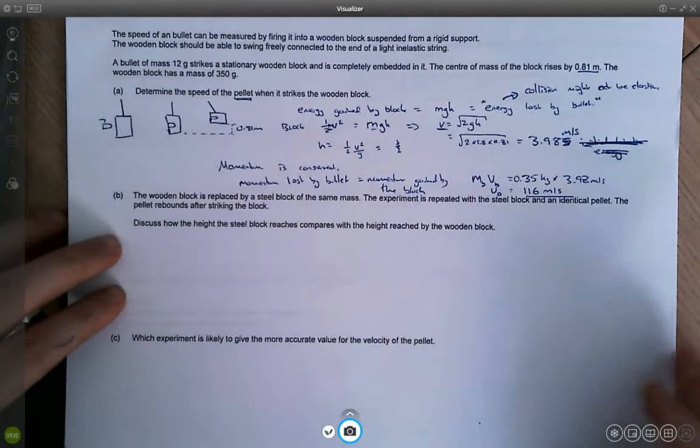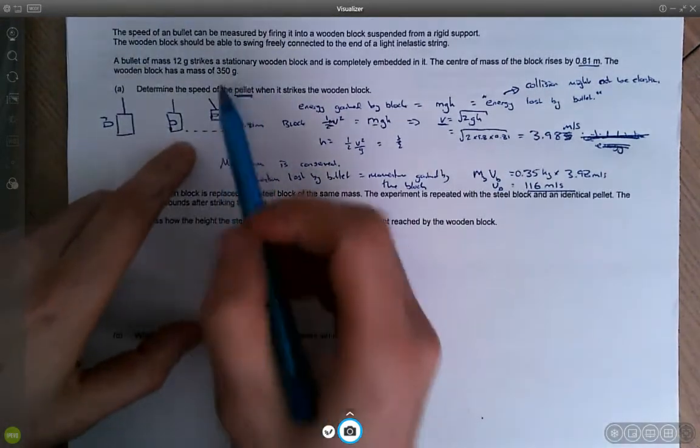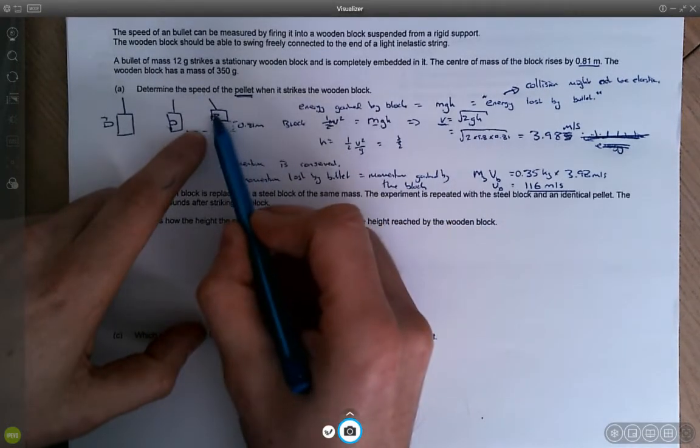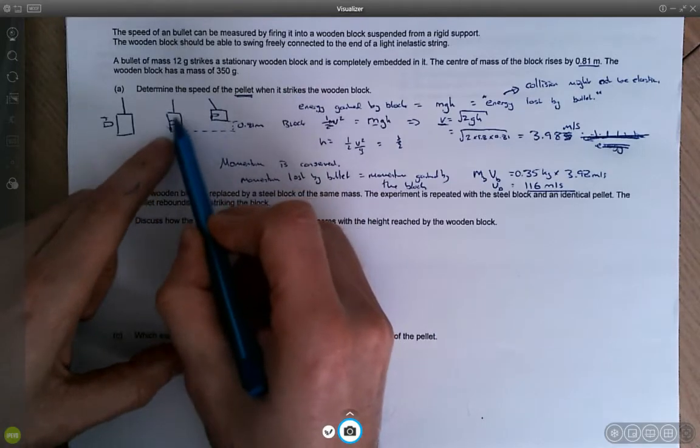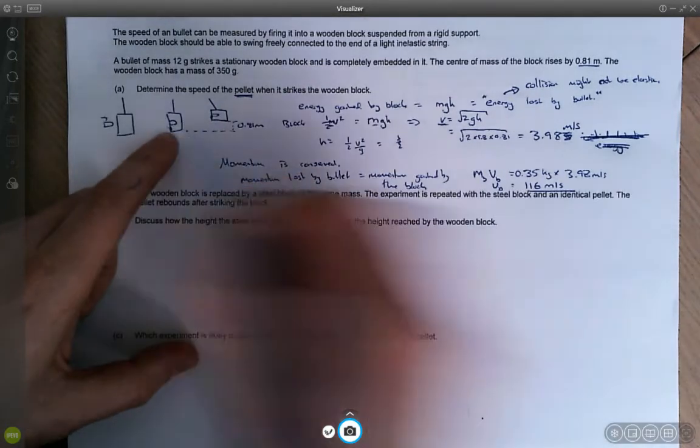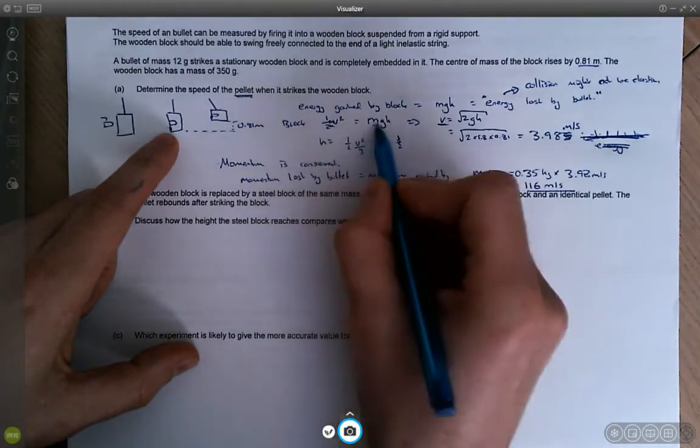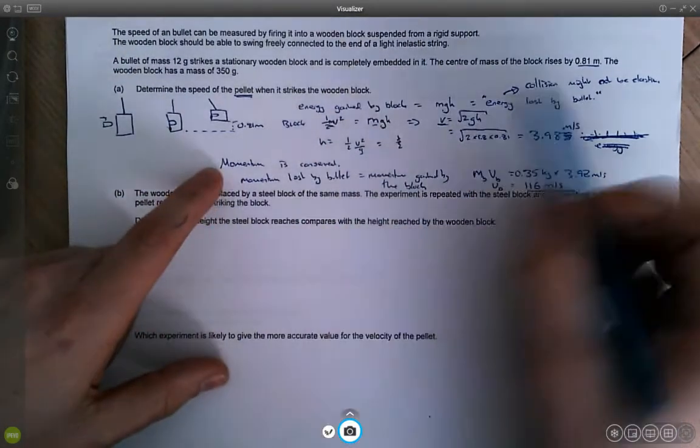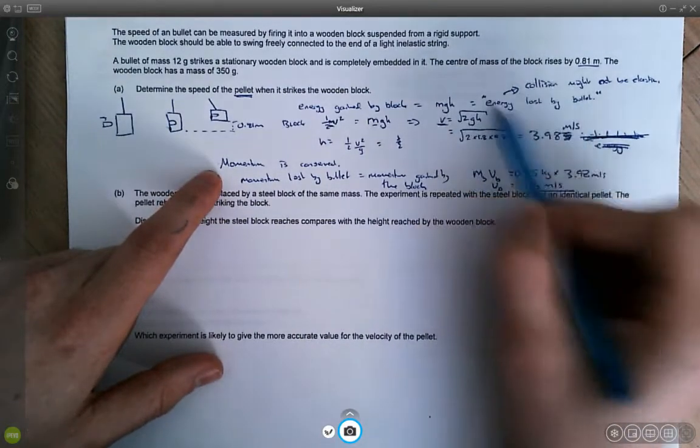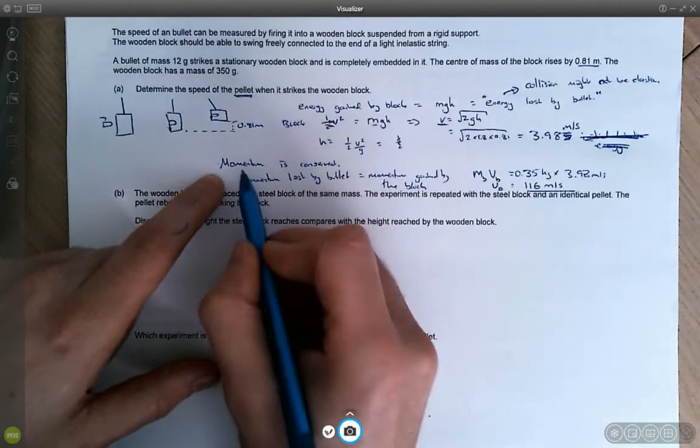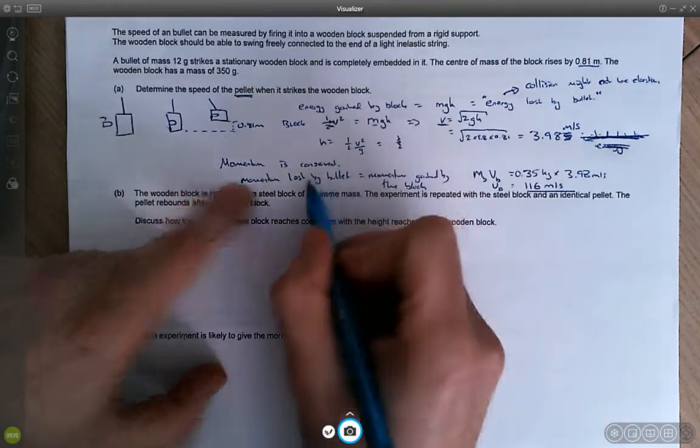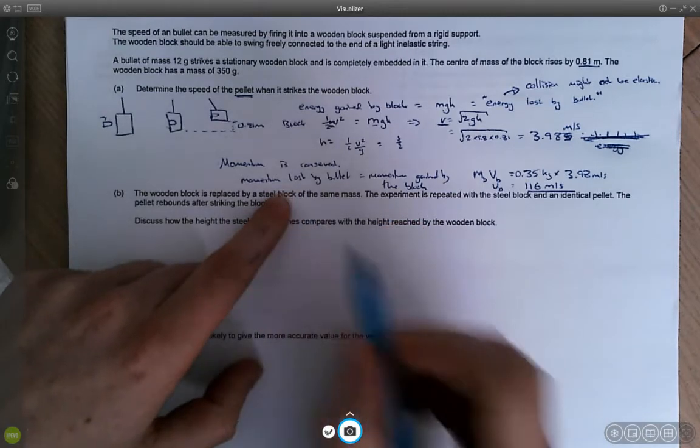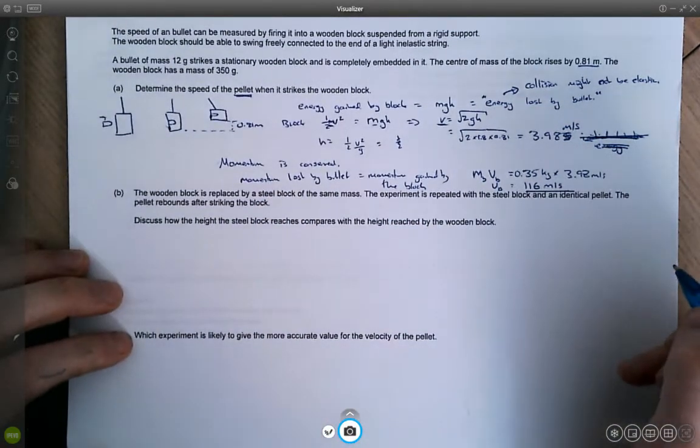So just to recap the steps, we find out the energy gained by the block, the gravitational potential energy, that's equal to the initial kinetic energy of the block. So we work out the initial velocity of the block by equating half mv squared equals mgh. We then say what is always conserved? Well, energy might not be conserved, so we can't strictly say this is true. But we can say that the momentum gained by the block will be equal to the momentum lost by the bullet. And we can use that to work out the velocity.